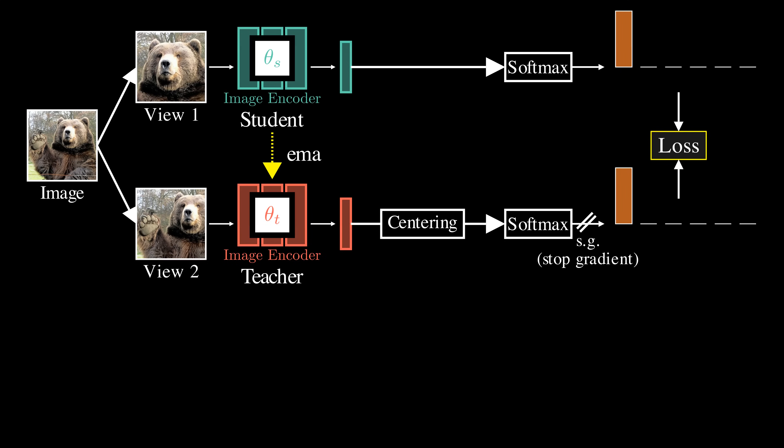Instead of computing the center vector for each batch independently, we maintain a moving average of the center over time. That sounds great. But using the centering trick may lead to collapsing to uniform distribution. To address this, we sharpen the distributions by lowering the temperature parameters in the softmax function.